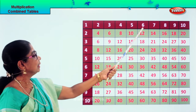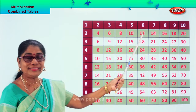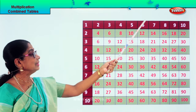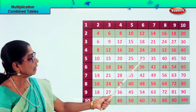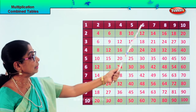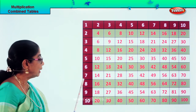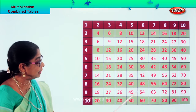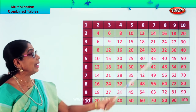Now this way: six ones are six, six twos are twelve, six threes are eighteen, six fours are twenty-four, six fives are thirty, six sixes are thirty-six, six sevens are forty-two, six eights are forty-eight, six nines are fifty-four and six tens are sixty. Now let's look at seven.